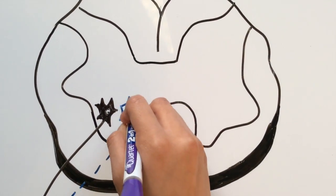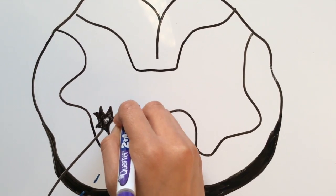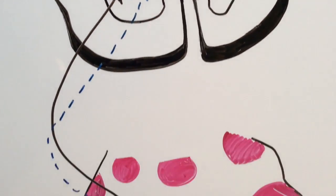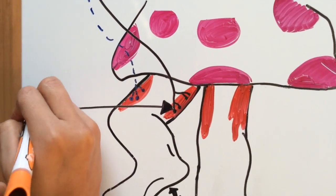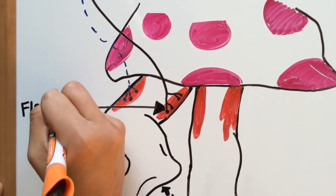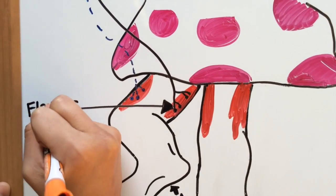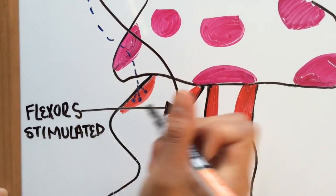Sensory neurons synapse with excitatory neurons that are part of the withdrawal reflex. The excitatory neurons stimulate motor neurons that innervate flexor muscles causing withdrawal of the limb from painful stimulus. Here we have the flexor stimulated.